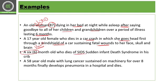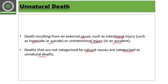A six-month-old who dies from SIDS — Sudden Infant Death Syndrome — in their crib is a natural cause of death. A 58-year-old male with lung cancer who sustained illness over eight months, finally develops pneumonia in the hospital and dies — this is also a natural cause of death. With the help of these characteristic features, we can identify natural and unnatural causes of death. In cases of unnatural causes, investigation is required to identify the real cause and determine whether intentional injuries were involved.